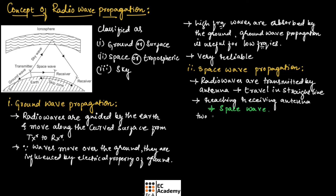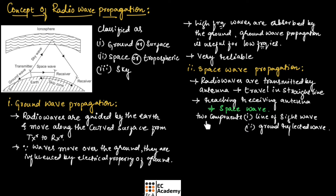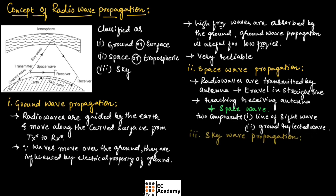The space wave is made up of two components: the first is the line of sight wave, where the signal is directly transmitted from transmitter to receiver, and the second is the ground reflected wave, where the signal is transmitted, reflected from the surface of the earth, and then reaches the receiver.